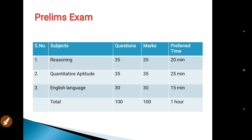In the prelims exam, three subjects are asked. First is reasoning — 35 questions, 35 marks. Second is quantitative aptitude — 35 questions, 35 marks. Third is English language — 30 questions, 30 marks.